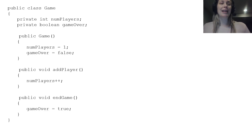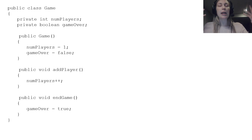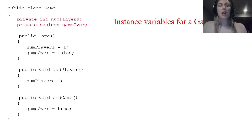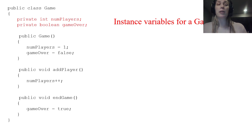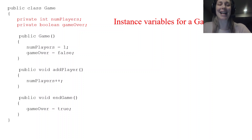We start off with public class Game. Game is our object. Remember, objects can be tangible physical things like a dog that we did in lesson 1, or in this case a game — it can be an abstract concept. Our instance variables are int numPlayers and boolean gameOver, both private, which is part of encapsulation — protecting that data.